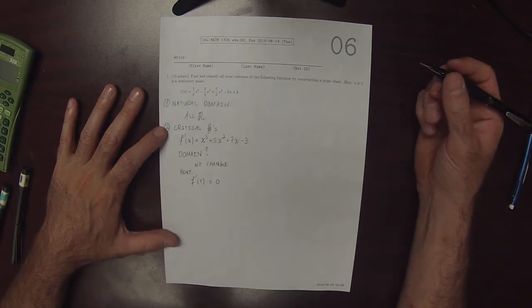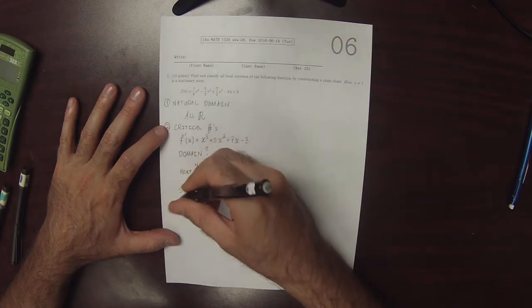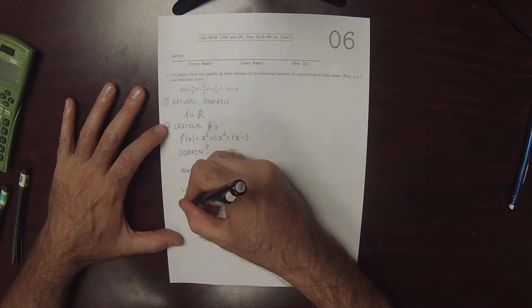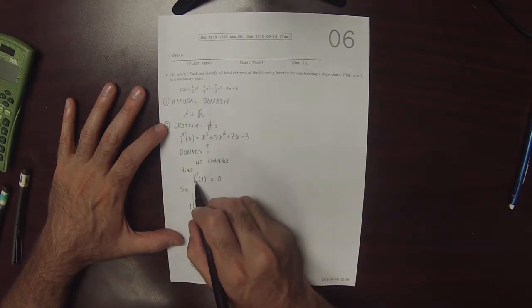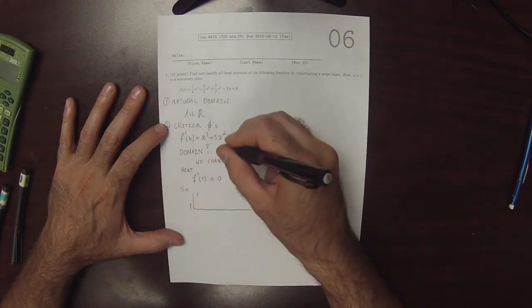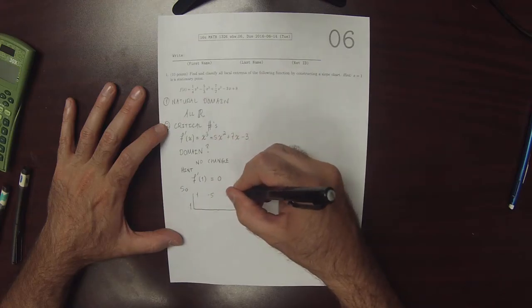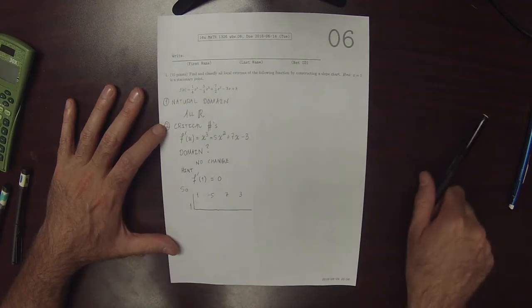We're going to use Horner's scheme to factor the derivative of f. So we want to evaluate the derivative of f at 1. So 1, -5, 7, -3. So testing this.